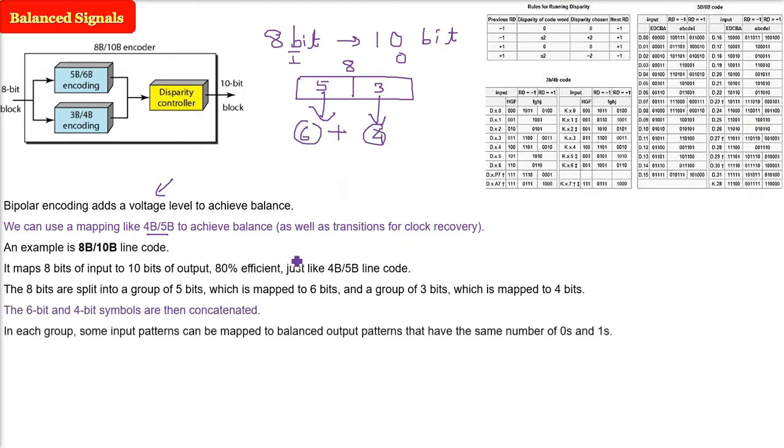In each group, some input patterns can be mapped to balanced output patterns that have the same number of 0s and 1s, because this is all about balancing. That's why we're using 8b/10b.